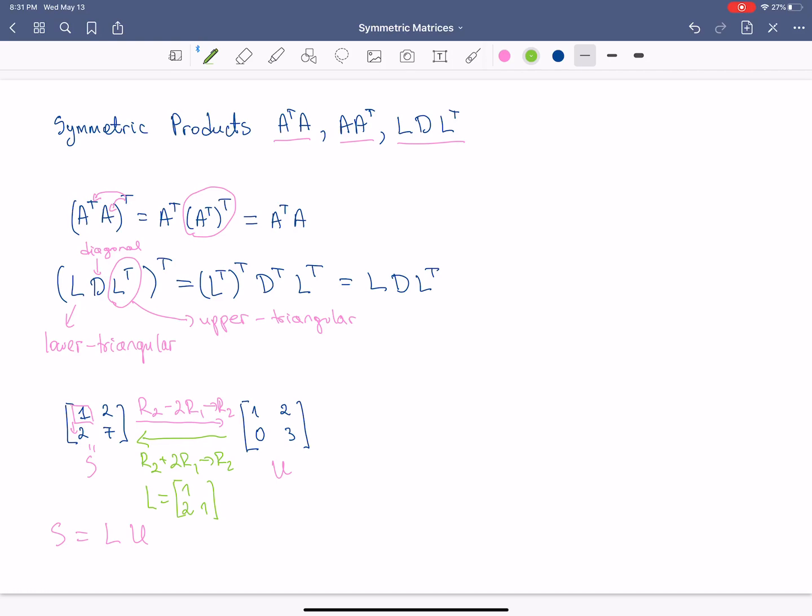Now, I want, instead of this U, I want a diagonal matrix times L transpose. Well, let me show you how to get it. So the issue with U is that it has a 3 instead of a 1 along the diagonal. So this matrix L will always have 1s along the diagonal because it represents elimination. So we always have 1s along the diagonal, 0s above the diagonal, and then other numbers under.